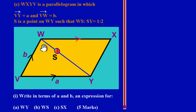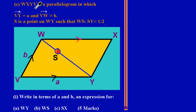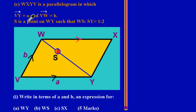WXYV is a parallelogram in which VY is equal to vector a — you can see V to Y at the base here — and VW is equal to vector b. The arrowheads above the letters indicate the direction the vector is traveling.